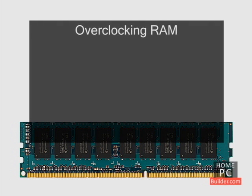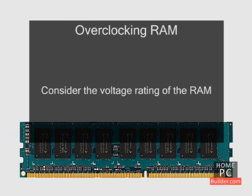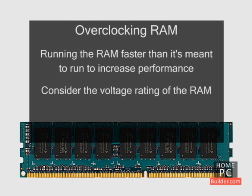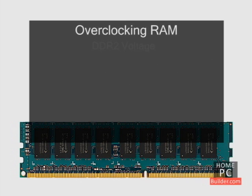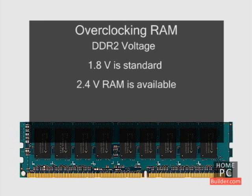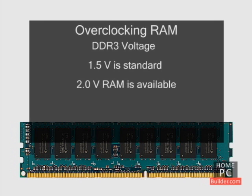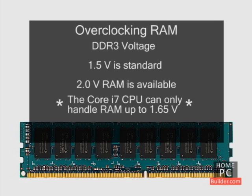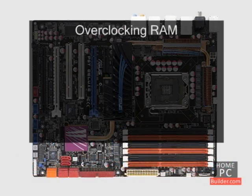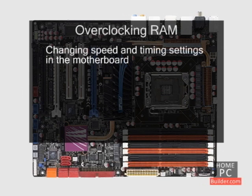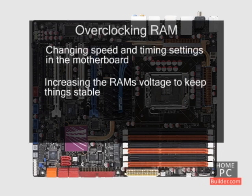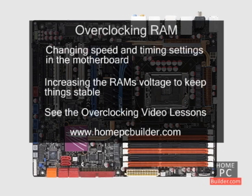If you're planning to try overclocking the RAM, you might also look at the voltage rating of the RAM. Overclocking means running the RAM faster than it's meant to be run to get more performance. The standard voltage of DDR2 RAM is 1.8 volts, and you can find RAM that will run it up to 2.4 volts. With Intel's Core i7 CPUs, the RAM voltage is limited to 1.65 volts. To overclock the RAM, you'll be increasing its speed using settings in the motherboard's BIOS and upping the voltage of the RAM to keep the system stable and working.